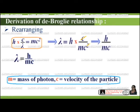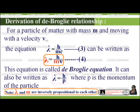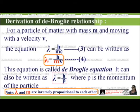For a particle of matter with mass m moving with velocity v, the equation λ = h/mc can be written as λ = h/mv, where h is Planck's constant, m is the mass of the particle, and v is the velocity. This is called the de Broglie equation. Since momentum p = mv, we can also write λ = h/p, where p is the momentum of the particle. Note that λ and m are inversely proportional to each other.